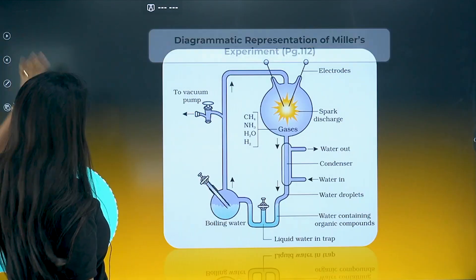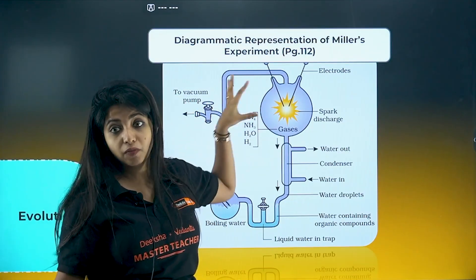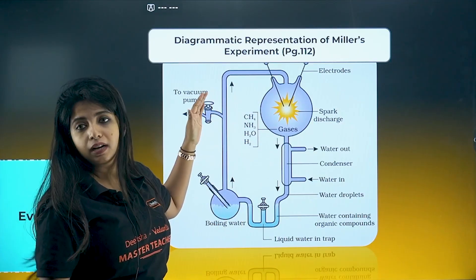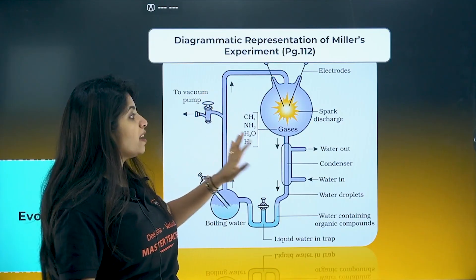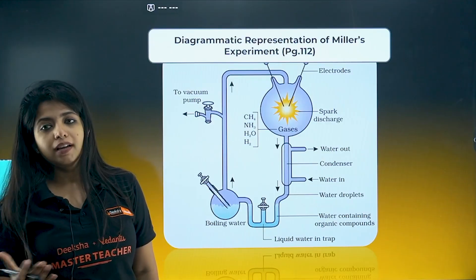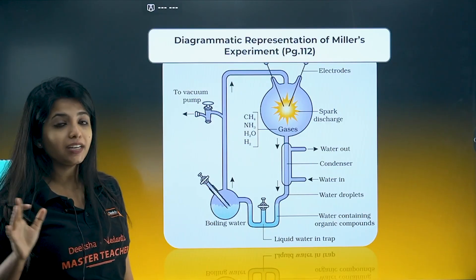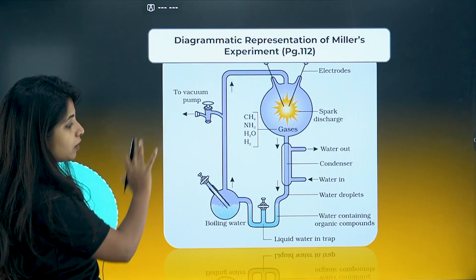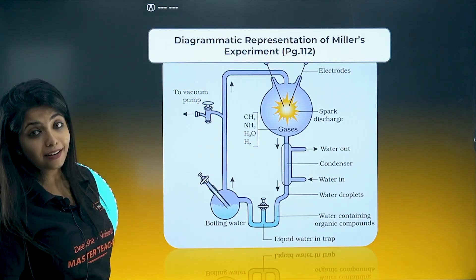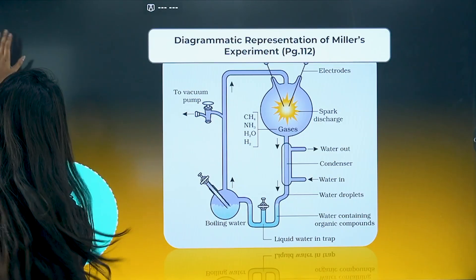The Evolution chapter — the diagrammatic representation of Miller's experiment is very, very important. The four things needed: methane, ammonia, H2O, and hydrogen (H2). Do not forget, and make the diagram very properly. Mention the temperature — it was 800 degrees Celsius where this was performed.